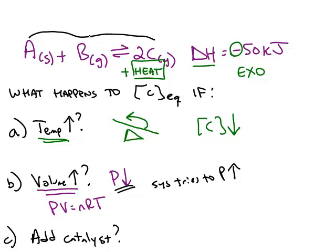The reactant side has one mole of gas, while the product side has two moles of gas. The system can shift to the left or to the right. In this case, it's trying to increase the pressure. And in PV equals nRT, a larger value of n gives us a larger pressure. When the system is trying to increase the pressure, it's going to shift to the right. And shifting to the right means it makes more C. So the equilibrium amount of C increases.